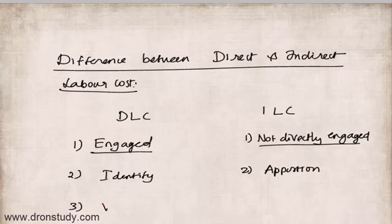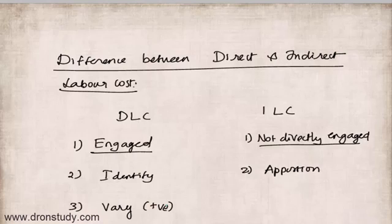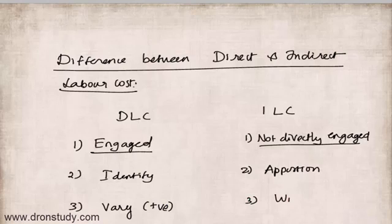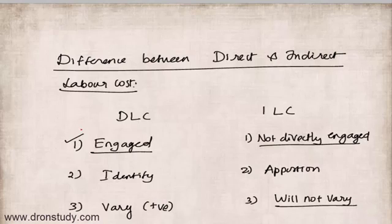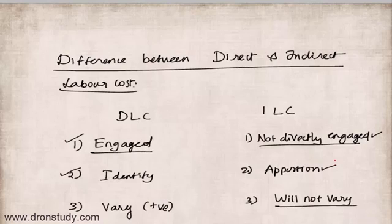The third difference relates to changes with volume. Direct labor cost will vary with the volume of production — a positive relationship, so if volume increases this cost goes up, and if volume comes down this cost can also come down. Indirect labor cost, however, will not vary with changes in the volume of production. In summary: direct labor cost involves direct engagement, easy identification with a cost unit, and varies with production volume; indirect labor cost involves no direct engagement, requires apportionment, and does not vary with volume.